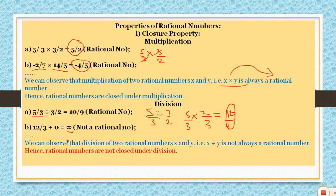However, if zero is involved as the divisor, rational numbers are not closed under division. If any rational number is divided by zero, the answer is not defined. So this is the case when it is not following closure property — when a rational number is divided by zero.